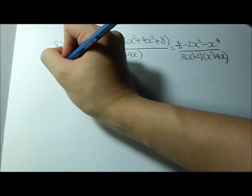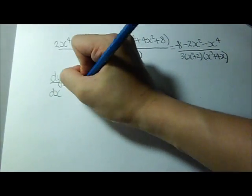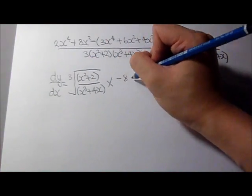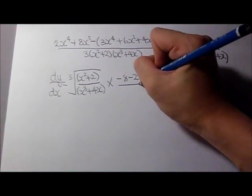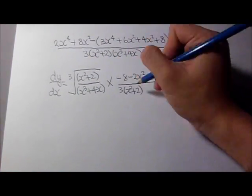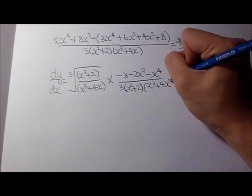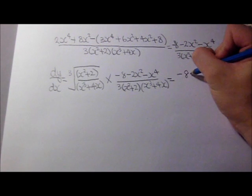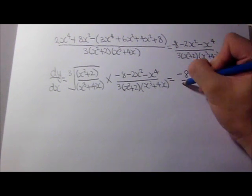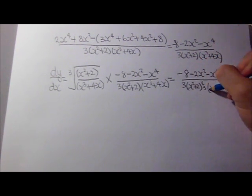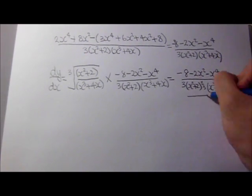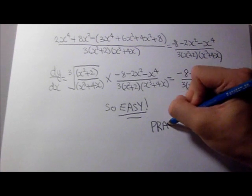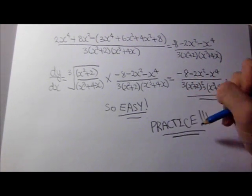And then we finally get a really nice expression, which is minus 8 minus 2x squared minus 4x to the 4 over 3 times x squared plus 2 times x cubed plus 4x. And in the end, we just operate it like the following procedure. And we'll end up with minus 8 minus 2x squared minus x to the 4 over 3 times x squared plus 2 to the 2 thirds times x cubed plus 4 squared.